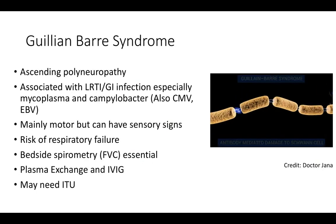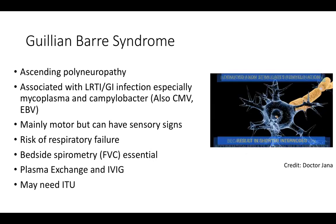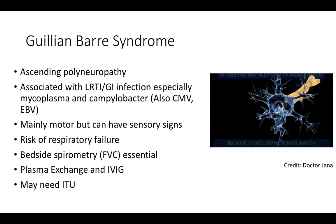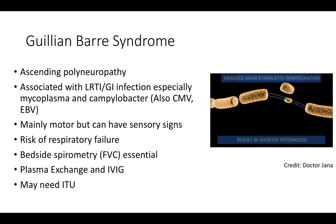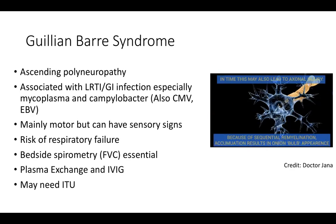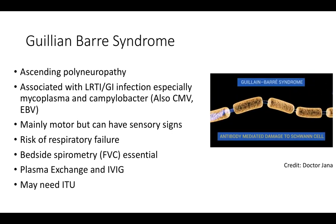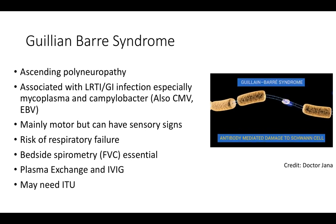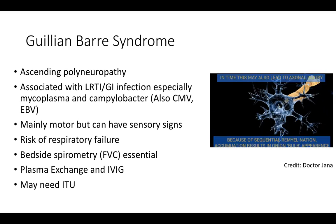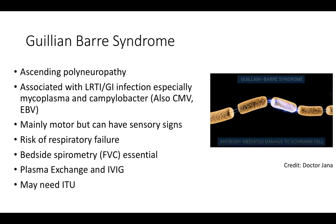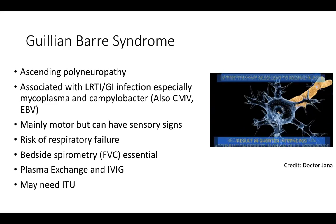Guillain-Barré syndrome is an ascending polyneuropathy where antibodies target the myelin sheath, causing slowed nerve conduction with motor and sensory dysfunction. It is associated with lower respiratory tract infections and gastrointestinal infections — notably Mycoplasma and Campylobacter — making recent travel relevant. Bedside spirometry (FVC) is essential due to the risk of respiratory failure. Treatment involves plasma exchange and IVIG to dilute the pathogenic antibodies. Always consider early escalation to the ICU.